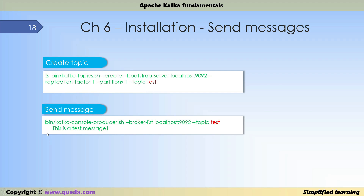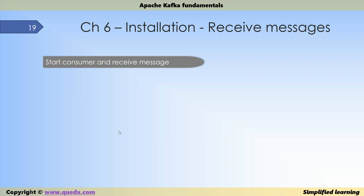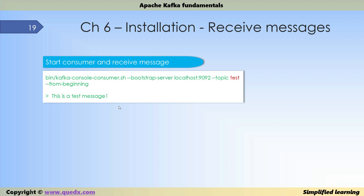Once a topic is created, you can use it to publish messages. Specify the broker and the topic name — once you hit enter, a prompt appears where you can enter one or more messages to be published. Once messages are published, start a consumer to receive them: specify the broker, topic name, and use the 'from-beginning' flag to read all messages from the beginning. This will display all messages available in that topic.